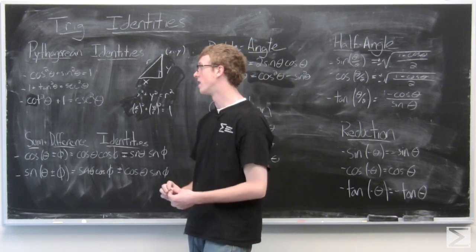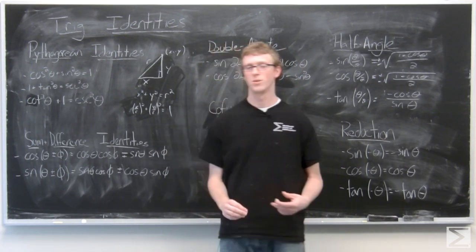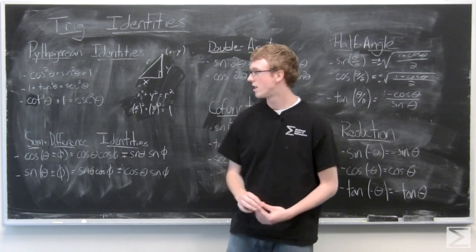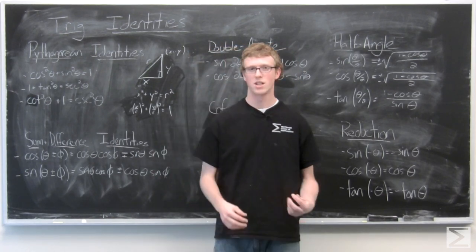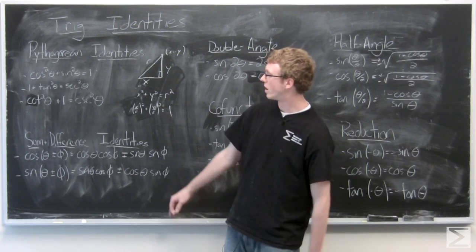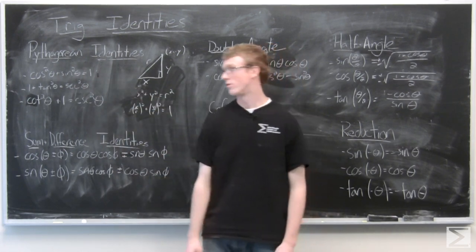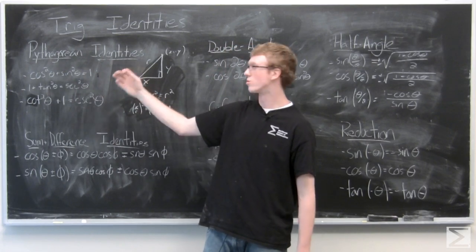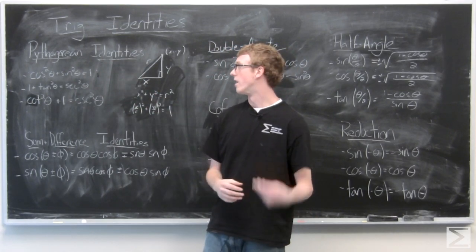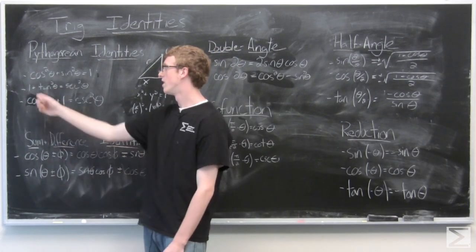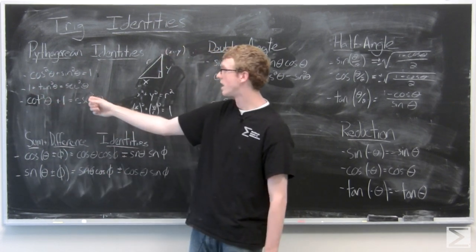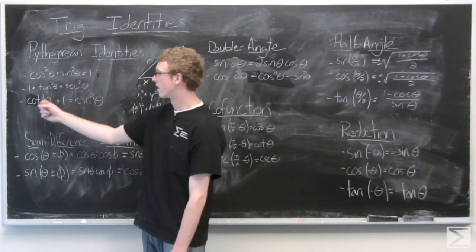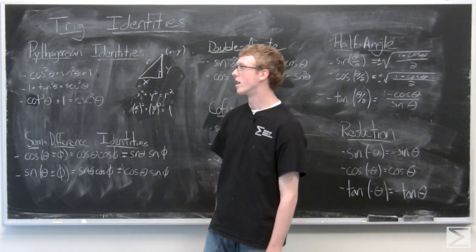That's probably the most important trig identity — you're going to constantly see it and need to reduce or rearrange equations using it. If you divide cosine²θ + sine²θ = 1 through by cosine²θ, you get the second identity: 1 + tan²θ = sec²θ. Or if you divide by sine²θ, you get cot²θ + 1 = csc²θ.